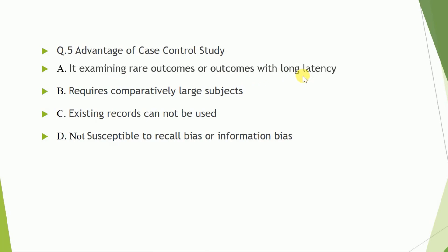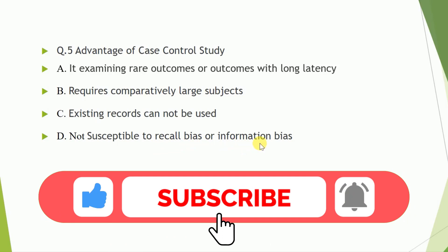Question number five: Advantage of case control studies. A. It examines rare outcomes or outcomes with long latency. B. Requires comparatively large subjects. C. Existing records cannot be used. D. Not susceptible to recall biases or information biases.